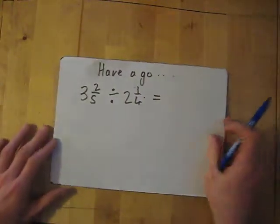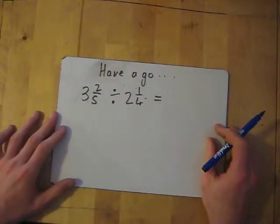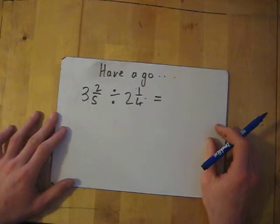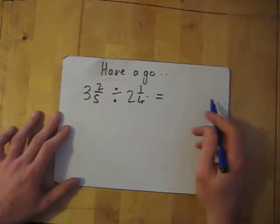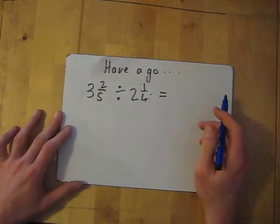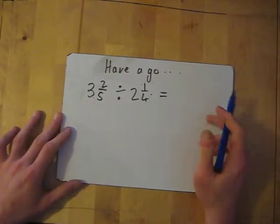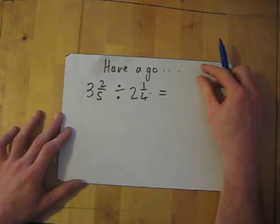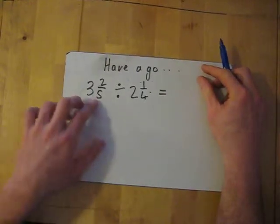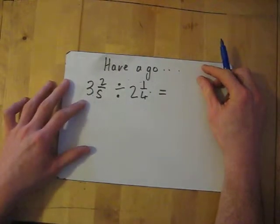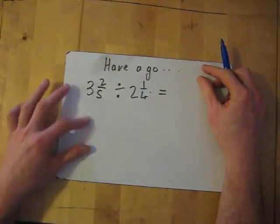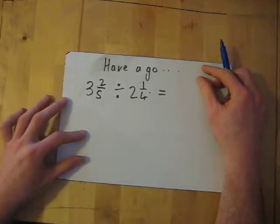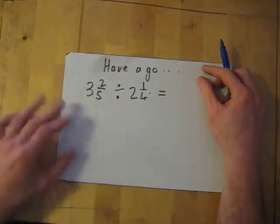Now one for you to have a go at yourself: 3 and 2 fifths divided by 2 and 1 quarter. If you want to pause, I'm going to go through the answers in 3 seconds. Remember: MA to convert to improper fractions, then KCF, then multiply. That's it.